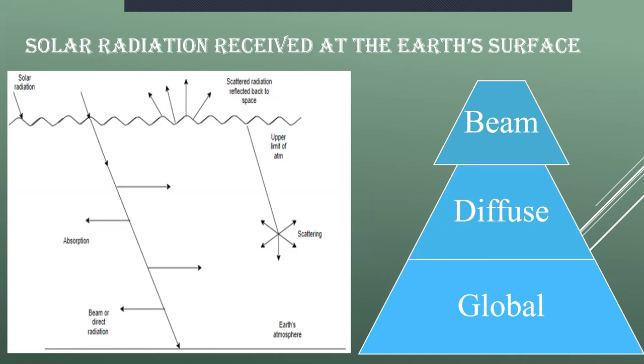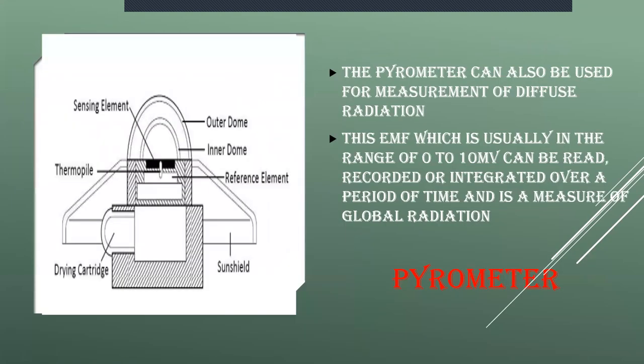These are the solar radiation that is received at the earth's surface. Now we are going to see two types of instruments used for measuring the solar radiation. First one is the pyrometer. Here you can see the construction of the pyrometer, where this is an instrument which measures both global or diffuse radiation.